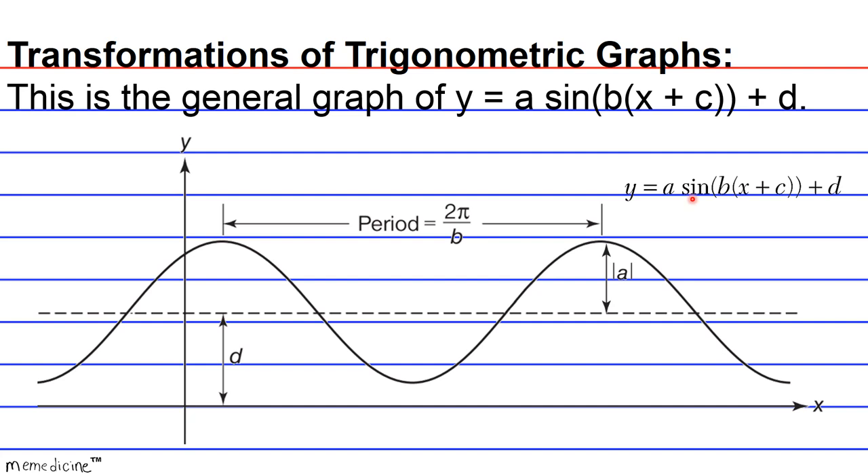Transformations of trigonometric graphs. This is the general graph of y equals a times the sine of b times x plus c plus d. Define the variable c.